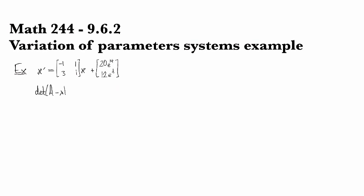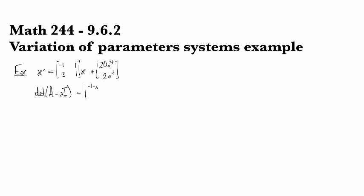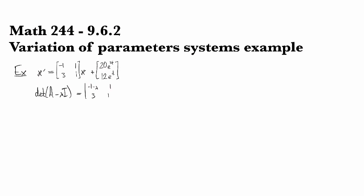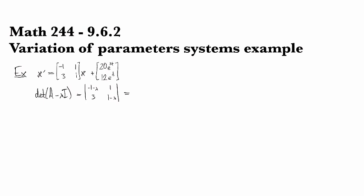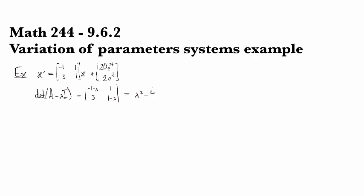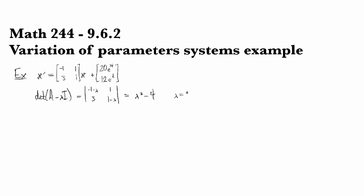The determinant of A minus λI is negative 1 minus λ, 1, 3, 1 minus λ. This boils down to λ squared minus 4, so we end up with λ equal to plus or minus 2.